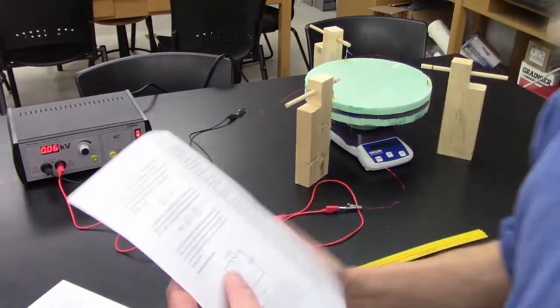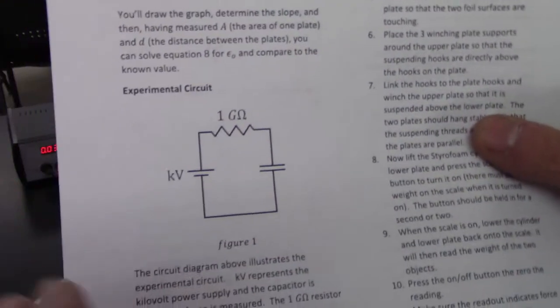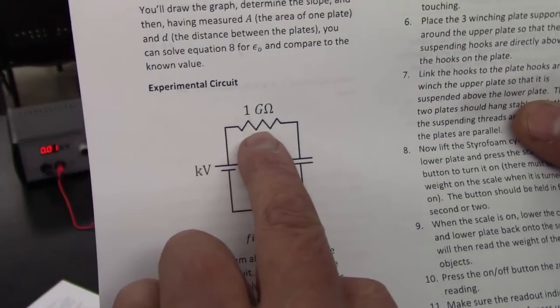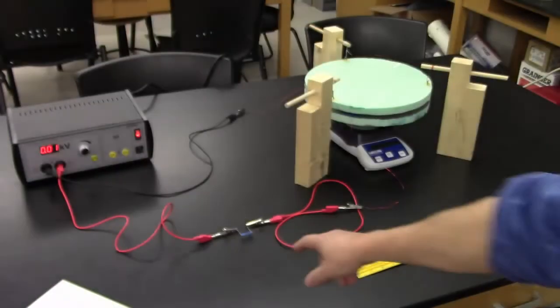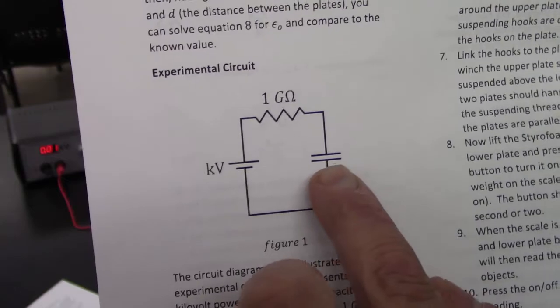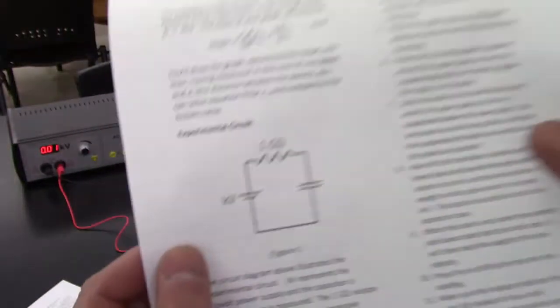And it's connected to the parallel plate capacitor according to this diagram. So here's the kilovolt power supply. There's a one giga-ohm resistor right there—that's just in there to protect the power supply from having to provide too much current. Here is the capacitor, parallel plate capacitor, and then it goes back to the power supply.